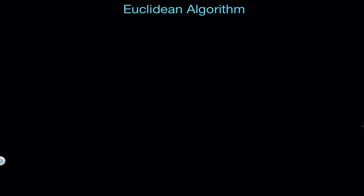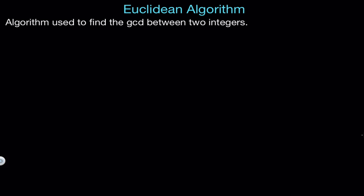Hi! In this video, I'm going to talk about the Euclidean algorithm. I will first give a statement of the algorithm, then I'll give an example and why it works. The Euclidean algorithm is an algorithm used to find the GCD, or the greatest common divisor, between two positive integers.